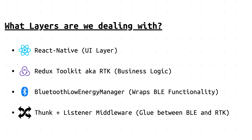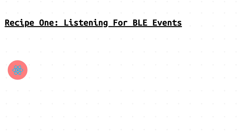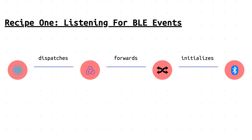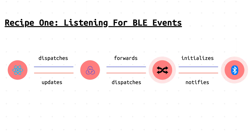Now that we know all the pieces on a high level, let's discuss how they work together in the form of two recipes. The first recipe is starting a listener. We begin with our screen dispatching an action to tell our middleware to start listening. RTK forwards the action to our middleware, and the middleware tells the BLE manager to start listening. Anytime a notification arrives, the BLE manager notifies the middleware — these continuously listen for notifications. The middleware then updates the Redux store with a dispatch, and the store updates the UI through a selector.